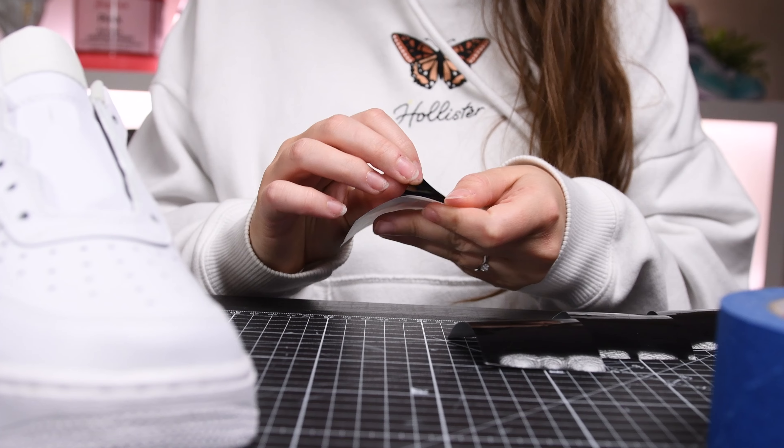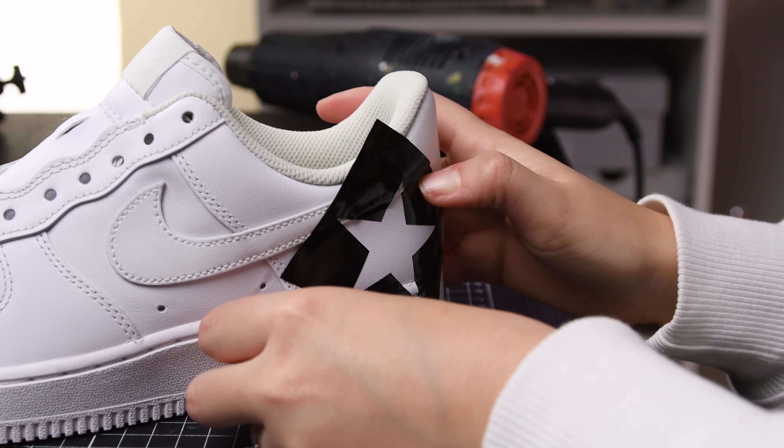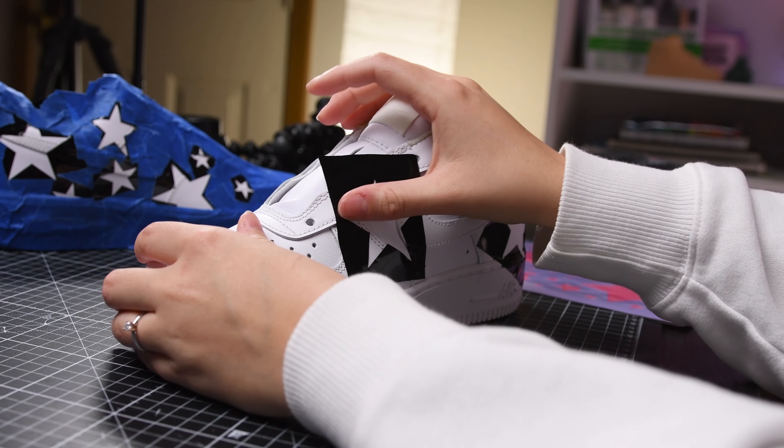Then, I'm going to apply these vinyl star stencils I made all over the shoes where I want them, and afterwards, I'm going to tape up and cover the rest of the shoes so I don't get paint anywhere I don't want it.